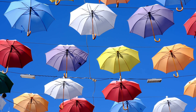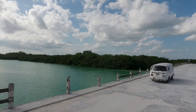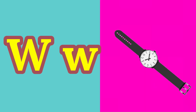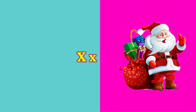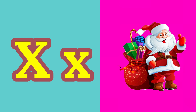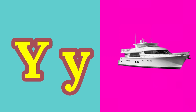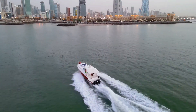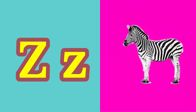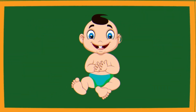V for Van, W for Watch, X for Christmas, Y for Yacht, Z for Zebra. Now I know my ABCs.